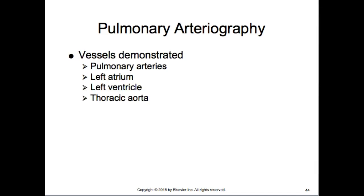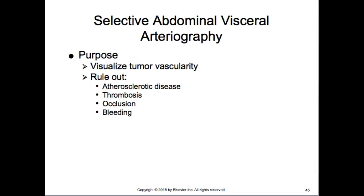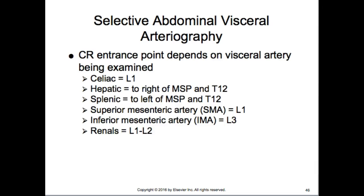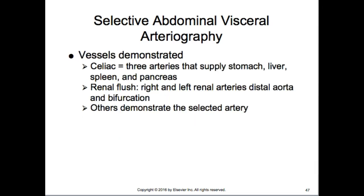In pulmonary studies we look at the left pulmonary arteries, left atrium, left ventricle, and thoracics. We rule out atherosclerosis, thrombosis, occlusion, bleeding, and evaluate tumor vascularity. CR entrance point depends on the area of interest. For the abdominal celiac artery, we care about the three branches supplying the stomach, liver, and spleen. For renals, we check that the right and left renal arteries are intact and not occluded — renal stenosis is a major cause of uncontrolled blood pressure.